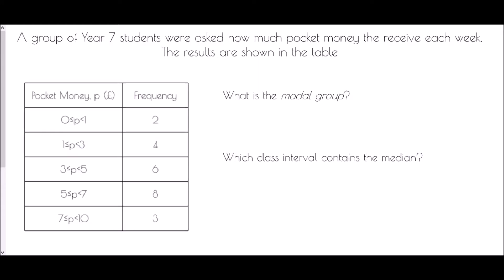A group of Year 7 students were asked how much pocket money they receive each week and the results are shown in the table. We've got pocket money in pounds. The first group is zero to one — this includes zero, so people who get no pocket money all the way up to one pound. Basically anyone who got zero up to 99 pence. In the next group, as soon as you get one pound or more you'll be in the next group, up to two pounds 99.